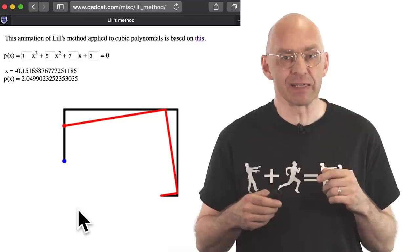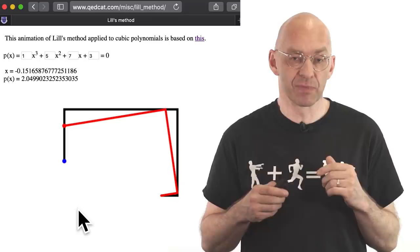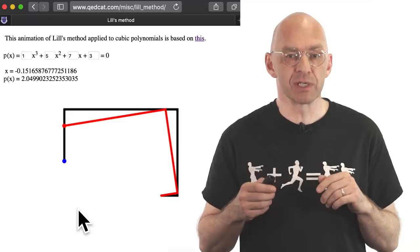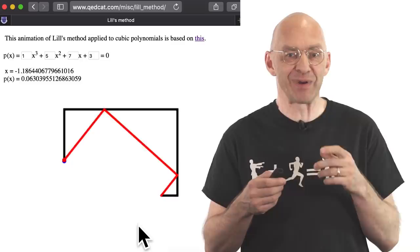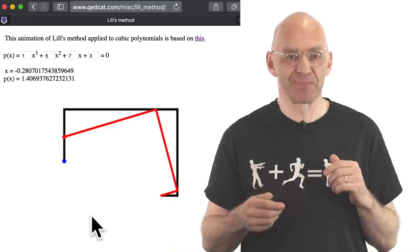I've set up this webpage over there so you can play with Lill's method. The link is shown at the top and also in the description of the video. On input of the coefficients of a cubic polynomial it draws the corresponding turtle path. You can then aim your laser by dragging the mouse there. Really quite stunning, isn't it? Let's now have a closer look at the changing numbers at the top.